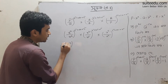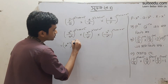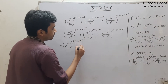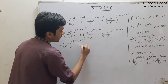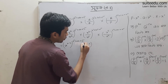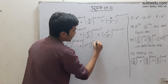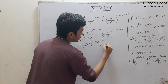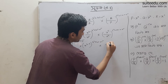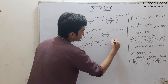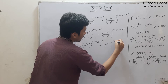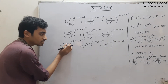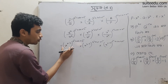We write: x to the power A minus B, whole to the power A squared plus AB plus B squared, into x to the power B minus C, whole to the power B squared plus BC plus C squared, into x to the power C minus A, whole to the power C squared plus CA plus A squared.